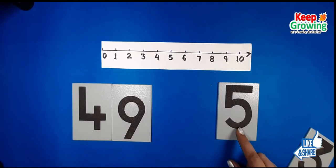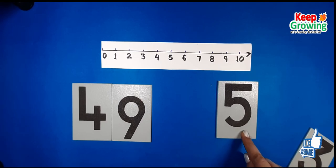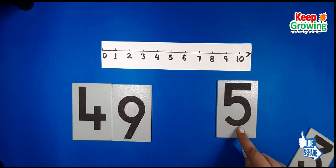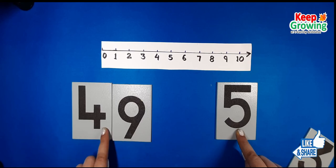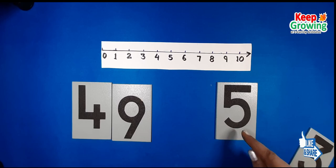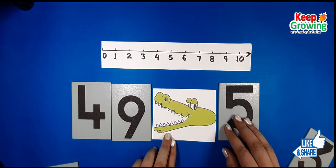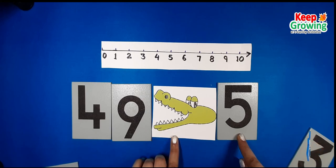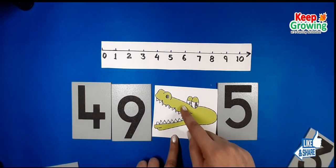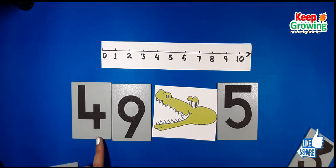Now we will compare a two-digit number to a one-digit number. Always remember that a single-digit number is always smaller than a two-digit number. For example, comparing 49 and 5 — number 49 is the bigger number. Ali the alligator, who always eats the bigger number, eats number 49 because number 5 is a single-digit number. The open mouth of the alligator is always towards the bigger number.